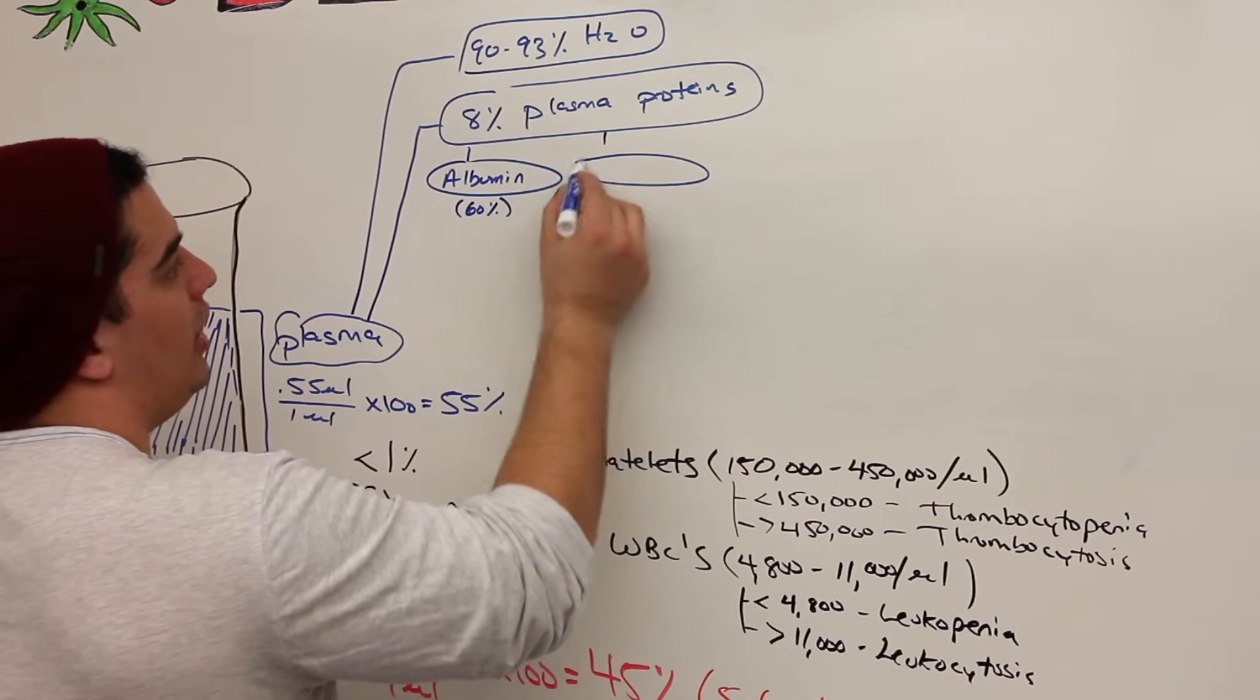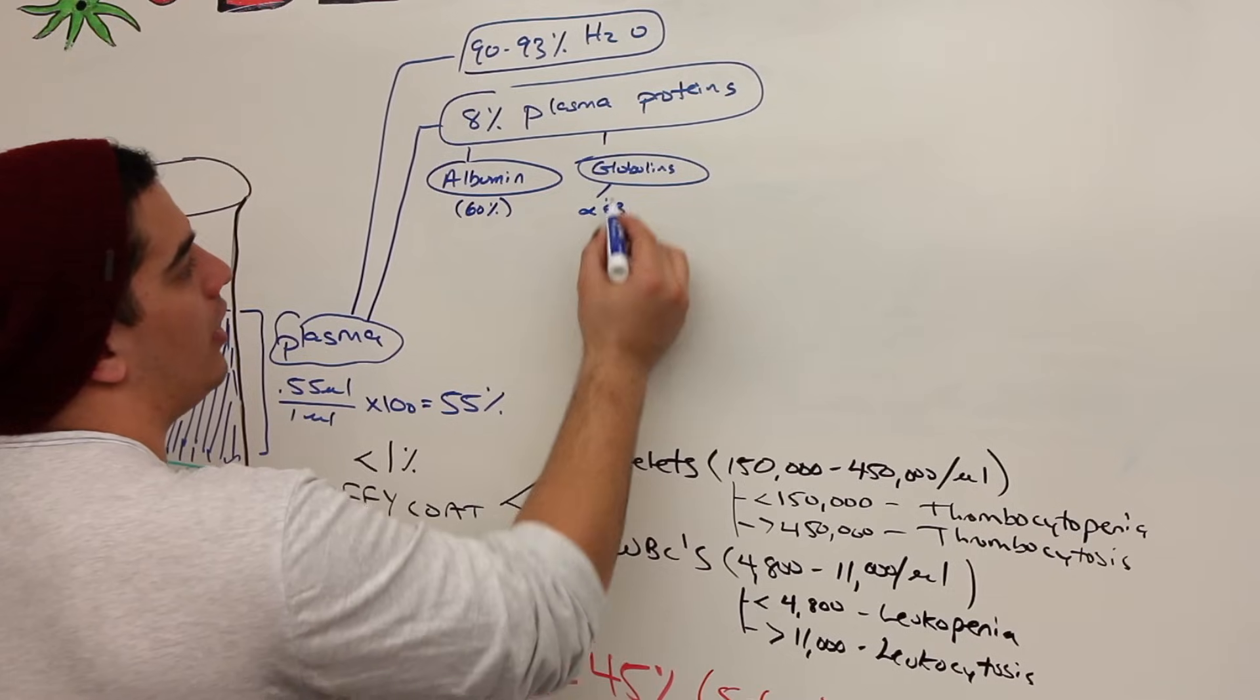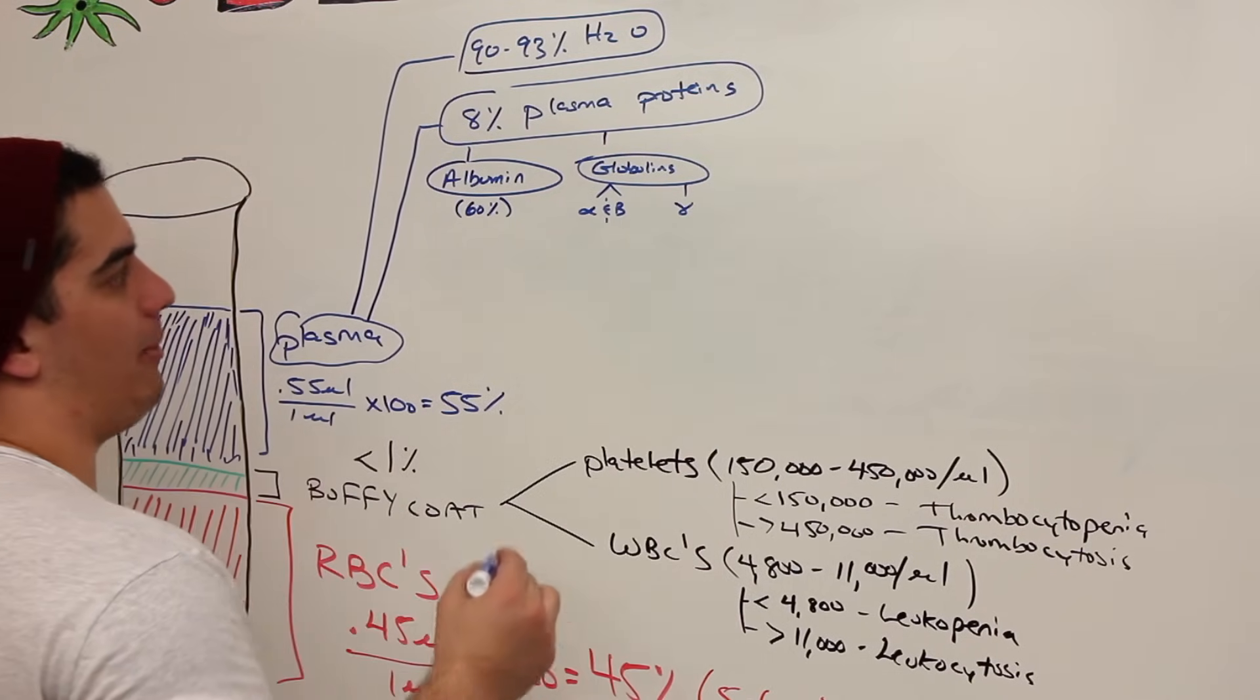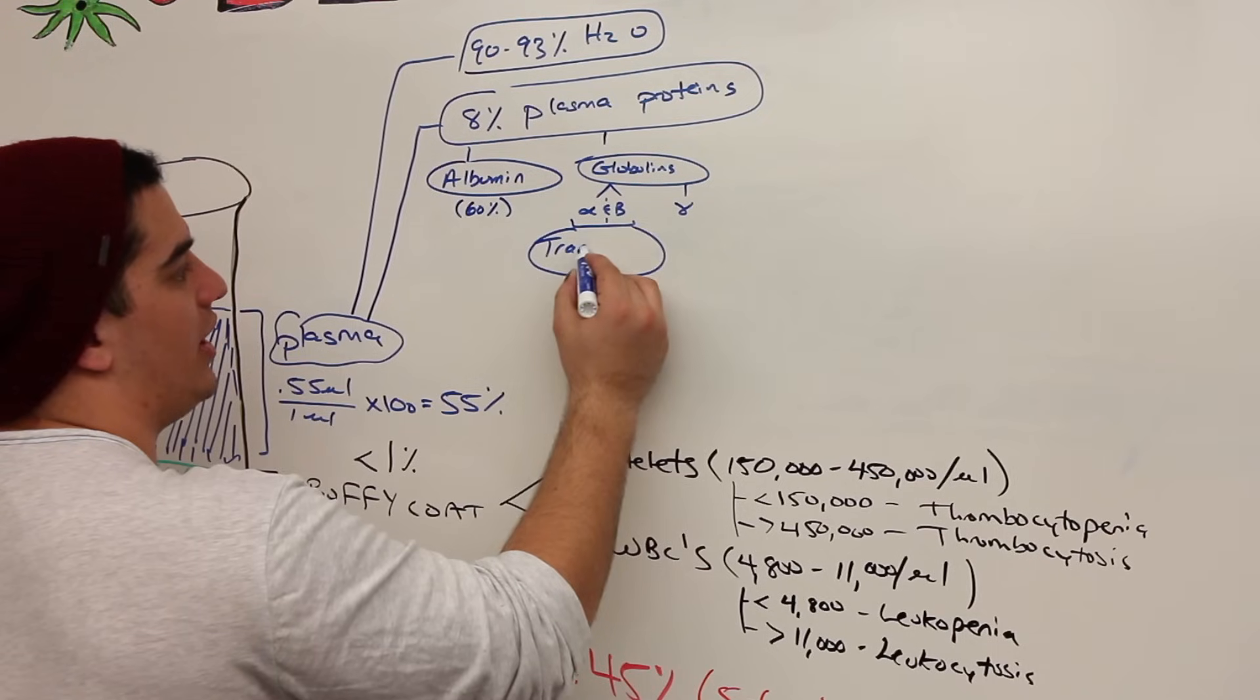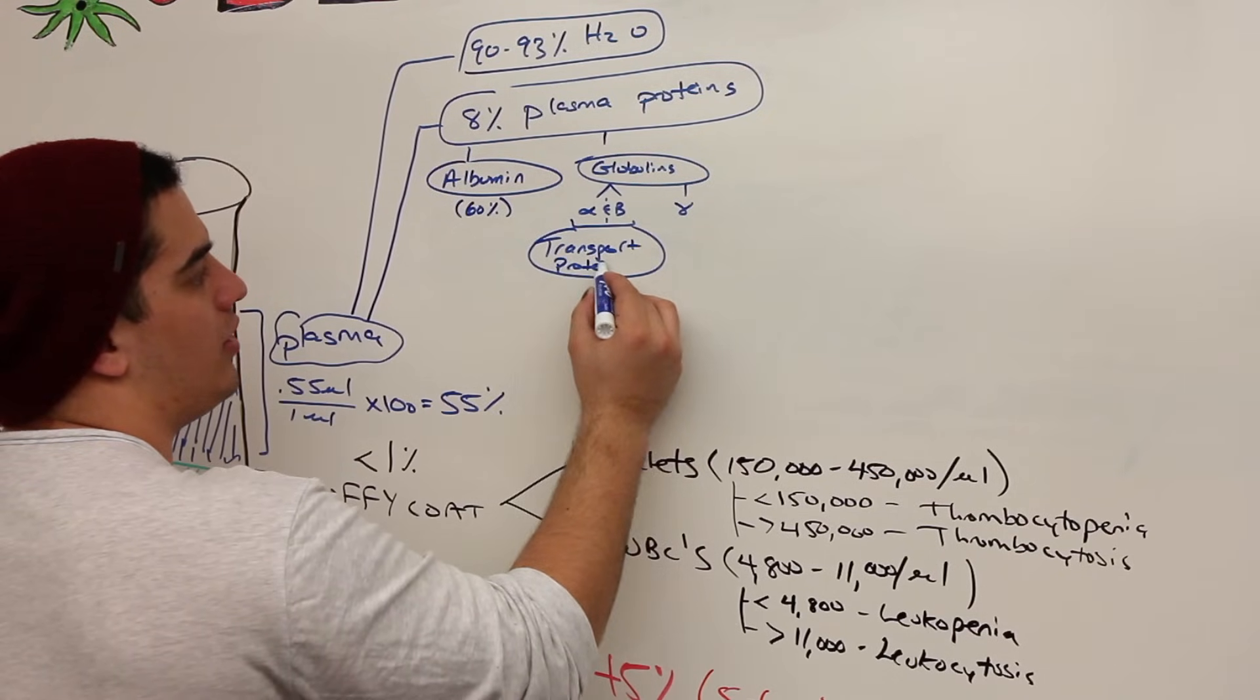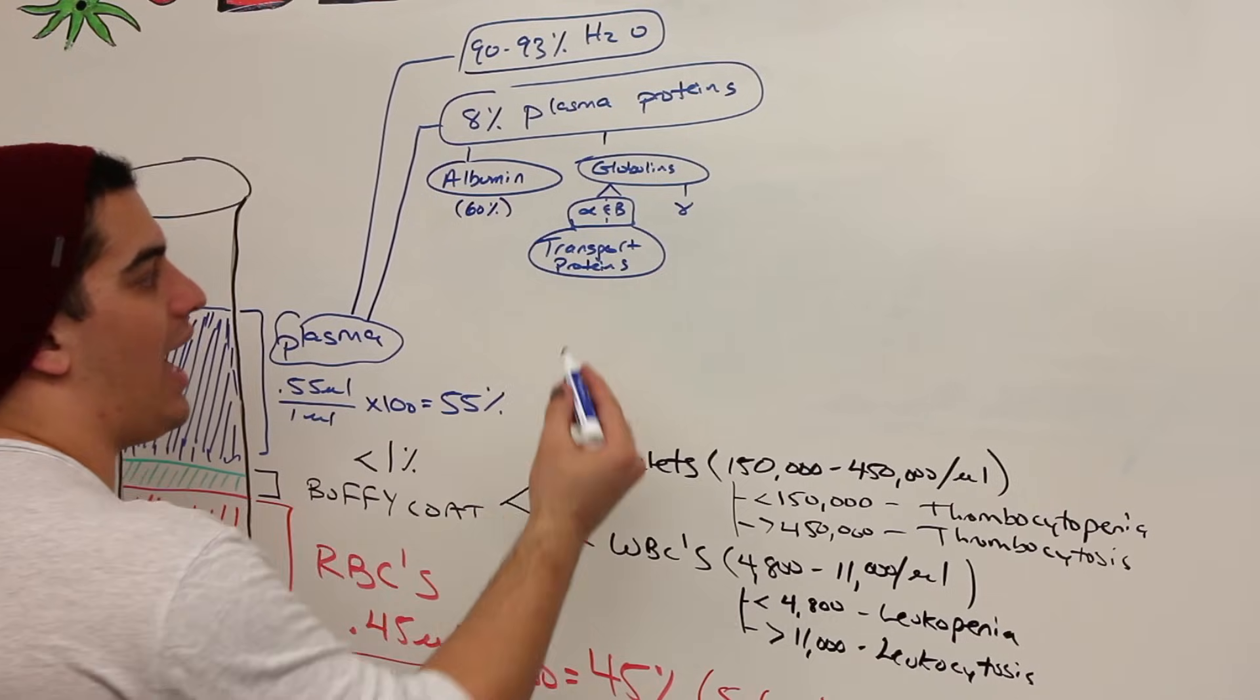The other ones are going to be your globulins. And your globulins, you have three types: alpha and beta, which are usually kind of grouped together, and then the other one is gamma globulins. So what does alpha and beta do? Alpha and beta are usually transport proteins. So these are very good transport proteins. So they transport substances that aren't soluble within the blood plasma. Like what? Like certain types of metals, for example, like iron.